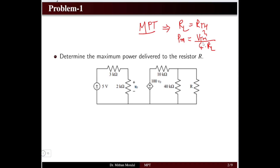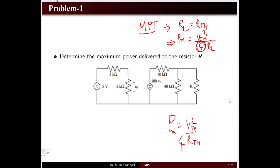Note carefully: although the general power formula is V²/R, in the Maximum Power Transfer Theorem there is a factor of four in the denominator. Students often make the mistake of leaving out this factor of four in their calculations. So when finding maximum power, you use the Thevenin voltage squared divided by four times the resistance. Understanding Thevenin's theorem properly is essential to solve problems on MPT.